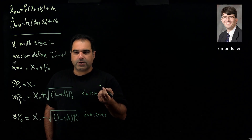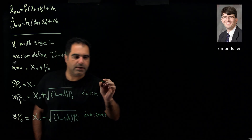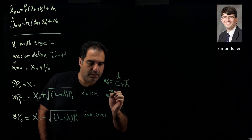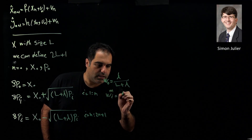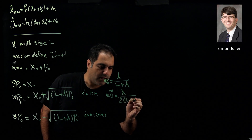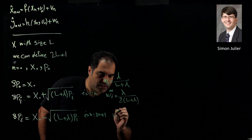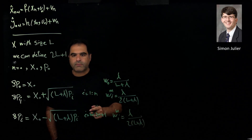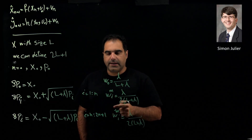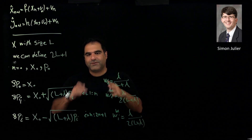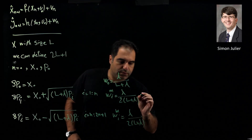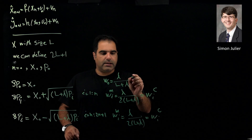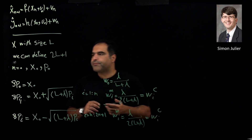We have weights corresponding to each sigma point. The weight w_0 equals lambda divided by (l plus lambda). The mean weights w_i^m equal 1 divided by 2(l plus lambda), and the covariance weights w_i^c are the same. For a special case, w_i^c equals w_i^m, and w_0 is the same for both the mean and covariance cases.